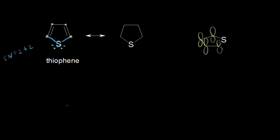So this sulfur looks like it's sp3 hybridized, but of course it's going to be a similar example to the pyrrole molecule. I can show a resonance structure for this thiophene molecule. I can take one of these lone pairs of electrons — the lone pair on the right — and show them moving in to form a pi bond between the sulfur and this carbon, which would kick these electrons off onto that carbon. So in the resonance structure, there's a pi bond between the sulfur and this carbon, a lone pair of electrons moved out onto this carbon giving that carbon a negative 1 formal charge, a pi bond still over here, and a lone pair of electrons left on this sulfur. So we give the sulfur a plus 1 formal charge.